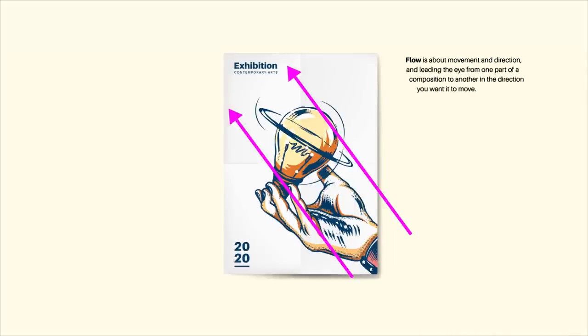Flow is all about the movement and direction that you lead the viewer's eye around your graphic design, and it just makes the composition look really neat and effective. The viewer will see the focal point of the hand and the light bulb, and their eye will be ushered up to the top left. It also makes a nice clear diagonal divide across the design, creating a nicer and neater focal point.